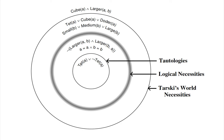Let's try to understand what a logical necessity is. A logical necessity is a sentence that is always true — there is no possible world in which the sentence could be false. Look at the two examples the textbook provides: the conjunction 'a is identical to a and b is identical to b,' and the sentence 'it's not the case that both a is larger than b and b is larger than a.'